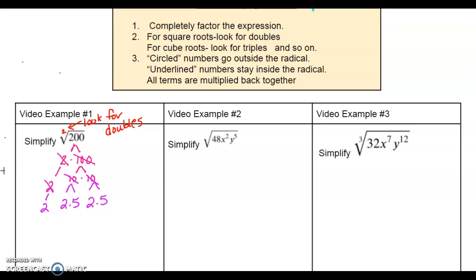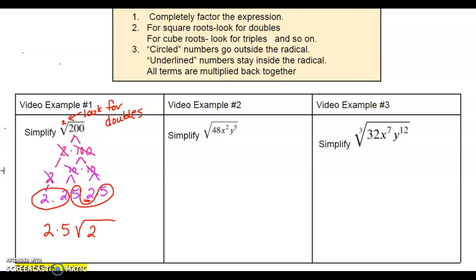I'm going to circle the doubles. They can be anywhere — here's a pair of twos, and here's a pair of fives. The remaining 2 is the only single two, so I underline it. The way it works: if it's a double, you write it once on the outside of the radical. So this 2 goes outside and this 5 goes outside. Everything is being multiplied together. This single 2 stays inside the radical. Multiply terms together: 2 times 5 is 10, giving us 10√2. That is the same as √200, just simplified.